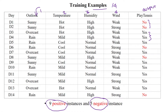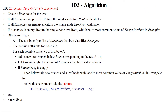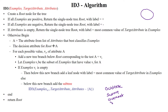The ID3 algorithm first follows root initiation — we have to select the root node. Here we are having four attributes. Outlook has three values: sunny, overcast, and rainy.